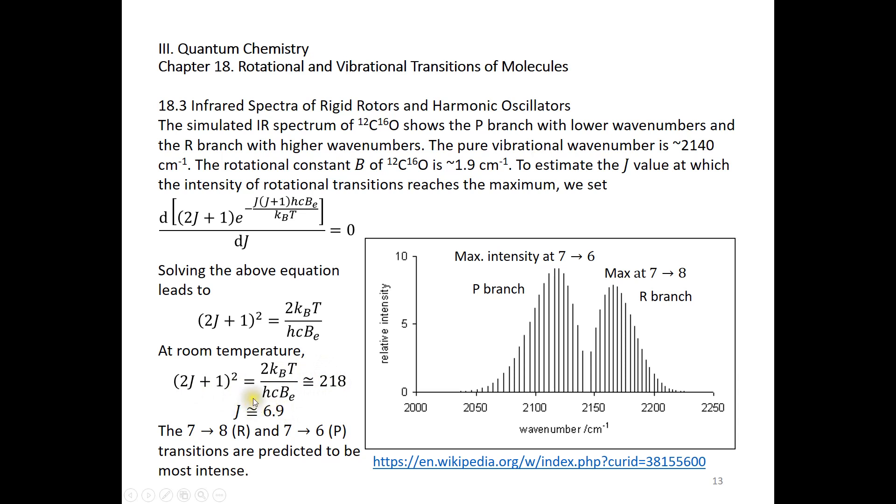When the bond distance is at equilibrium bond distance, we get 218 and then J is 6.9 or approximately 7, because the rotational quantum number must be an integer. When J is 7, the occupation number reaches the maximum at room temperature. If we're taking the spectrum at room temperature, we expect to see the occupation number reaches maximum when the rotational quantum number is 7. We expect to see more transitions from 7 to 8 and from 7 to 6 because we have more molecules in this rotational quantum number 7.